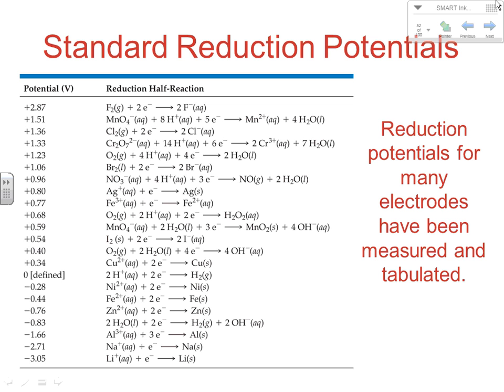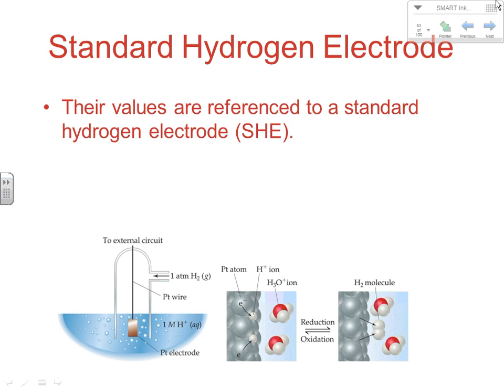Reduction potentials have to have a method of being tabulated, because what we're looking at is half a reaction, and we can't really have half of a reaction. So what we have to do is compare all of them to one half reaction — we let reactions take place if this other redox reaction is at the other side. These are all comparative values. The half cell we compare everything to, set at zero, is the standard hydrogen electrode, sometimes abbreviated SHE. If one of our electrodes is the hydrogen electrode, we're comparing it to something set at zero, and we can use that to calculate half-cell potentials.